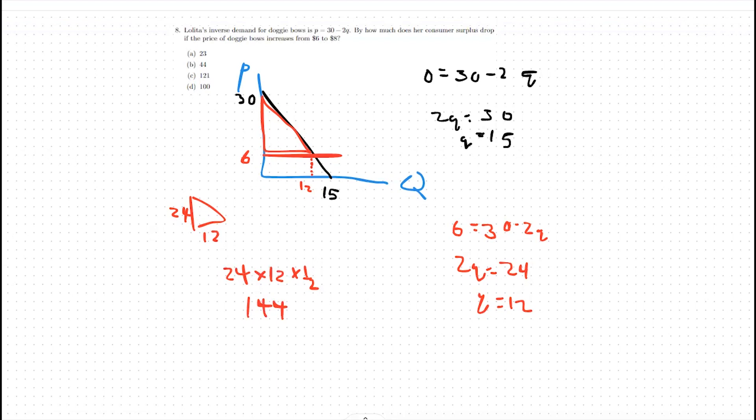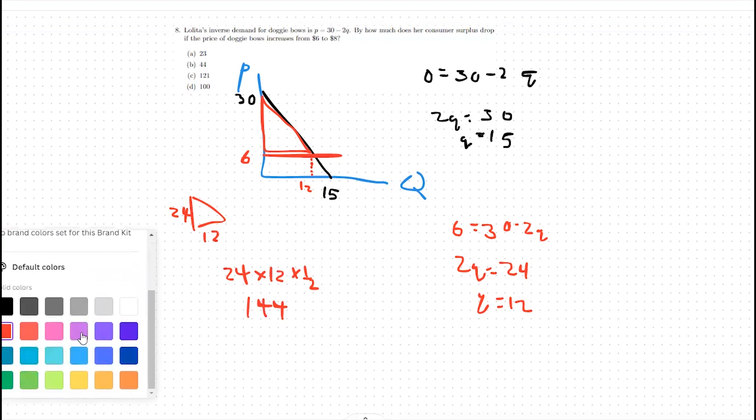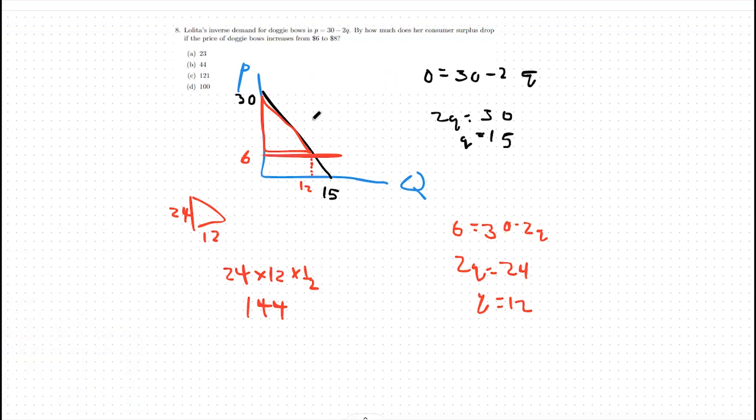Now we can do the same process for our $8 price. So at the price of $8, we're going to move up our price line accordingly. And we can see already that our triangle is going to be smaller than before, right?